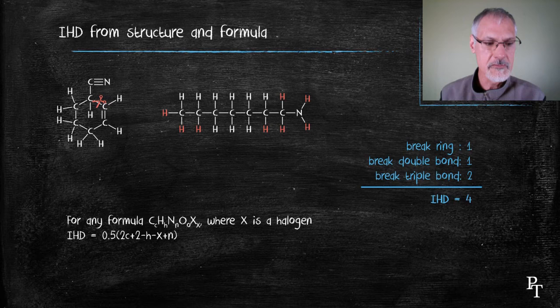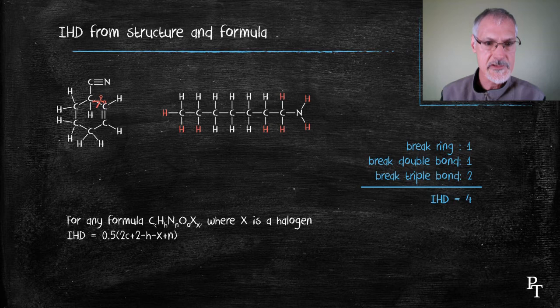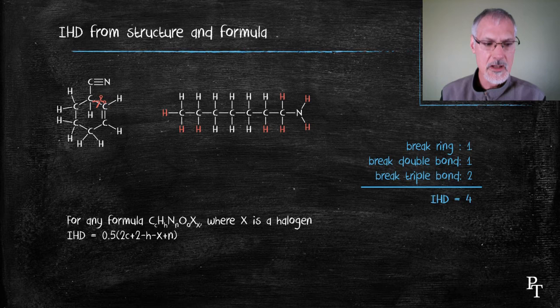Now, we can also predict the IHD from a mathematical formula where we take into account the number of carbons, hydrogens, nitrogens, oxygens, and halogens that we might have.